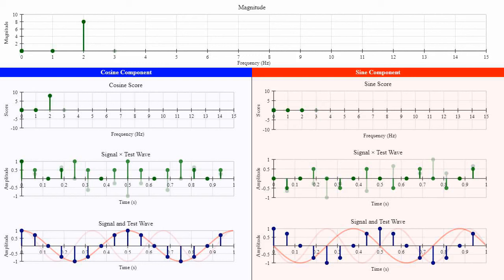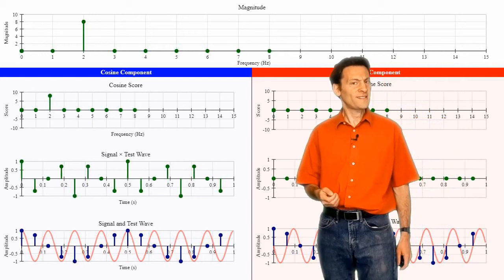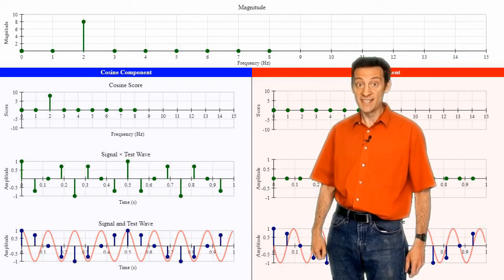Testing 3Hz, 4Hz, 5Hz, etc. gives us 0 again, as these frequencies are not present in the signal. This is fine for frequencies up to 8Hz. But then, something strange happens the moment the frequencies we test get higher than 8Hz.